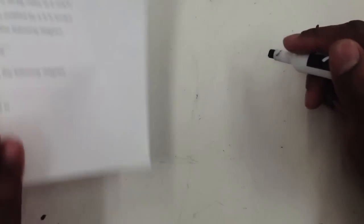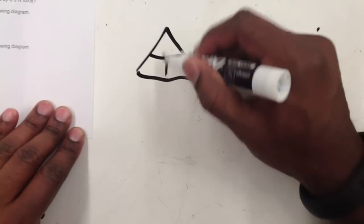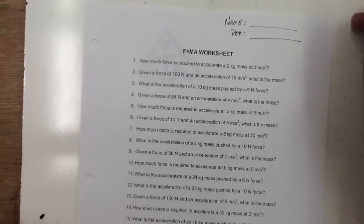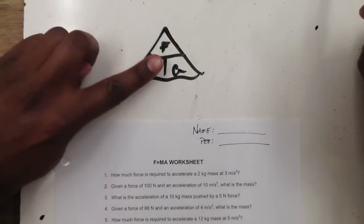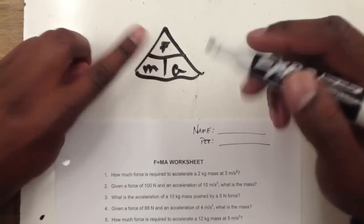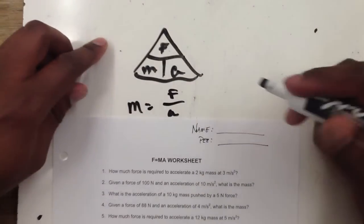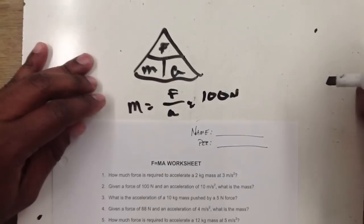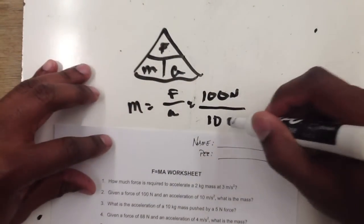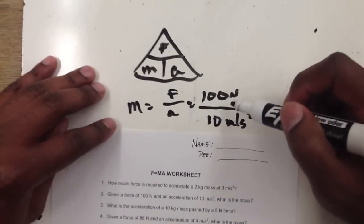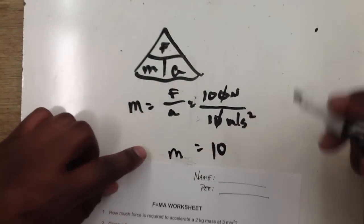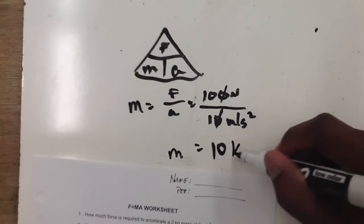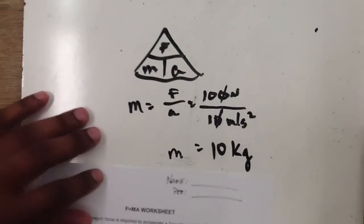Let's do another example. Given a force of 100 newtons and an acceleration of 10 meters per second squared, what is the mass? We cover up M in the triangle, so mass equals F over a — force over acceleration. Mass equals 100 newtons divided by 10 meters per second squared. 100 divided by 10 is 10, and mass is measured in kilograms, so the mass of this object is 10 kilograms.